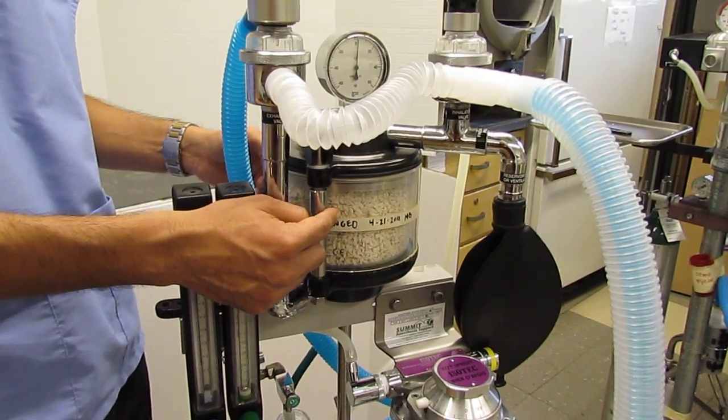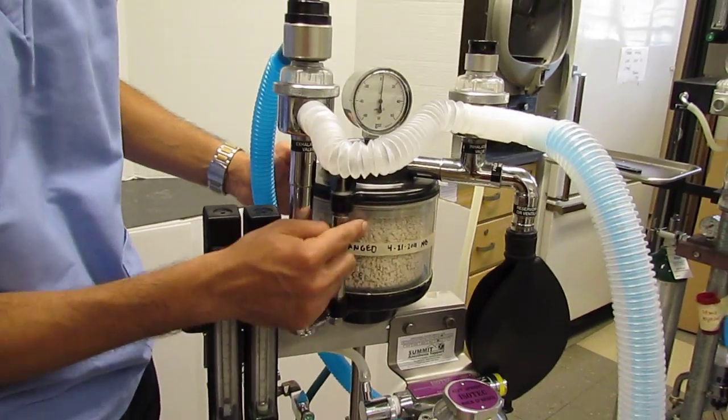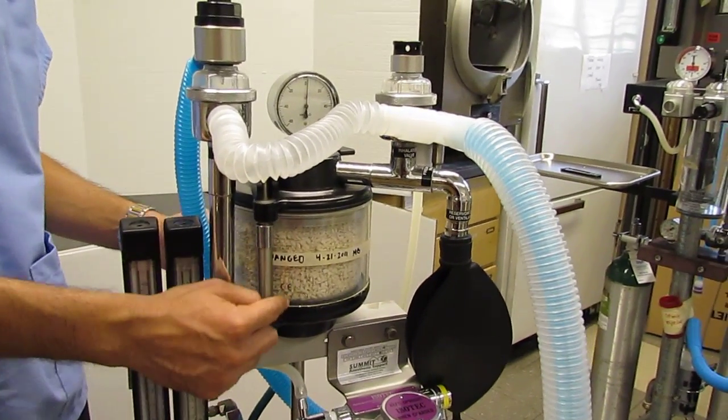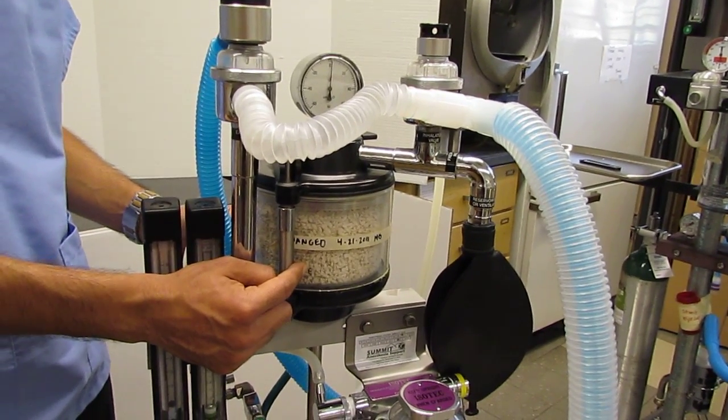But beyond that, we also have a color change that occurs. When in use, for isoflurane, when in use, you will see that the colors of the granules turn from white to about a violet or blue.